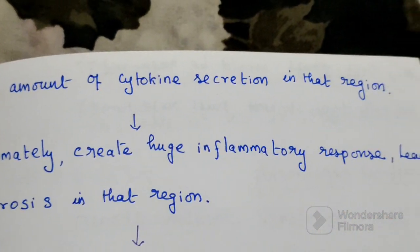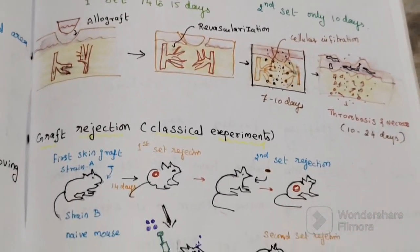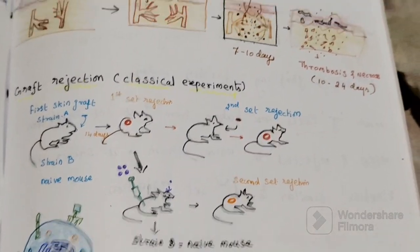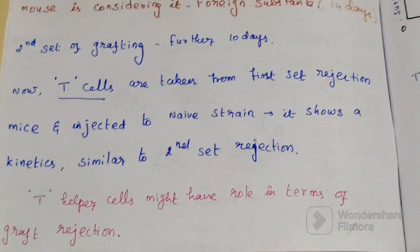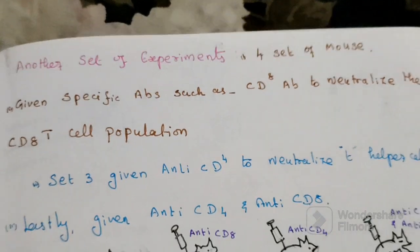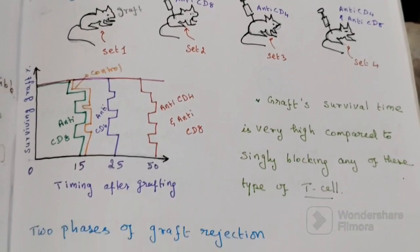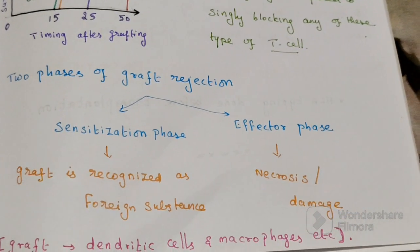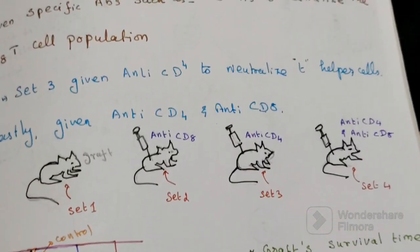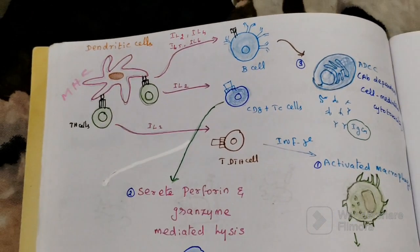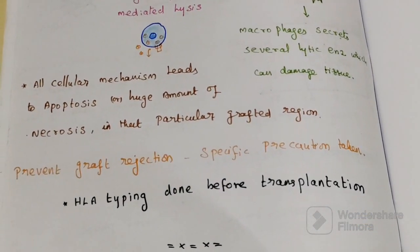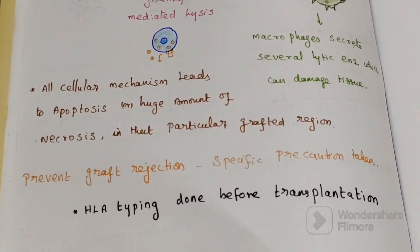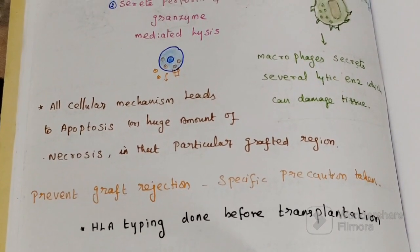HLA typing is done before transplantation. That is a very helpful method to reduce the risk of graft rejection. Thank you for watching.